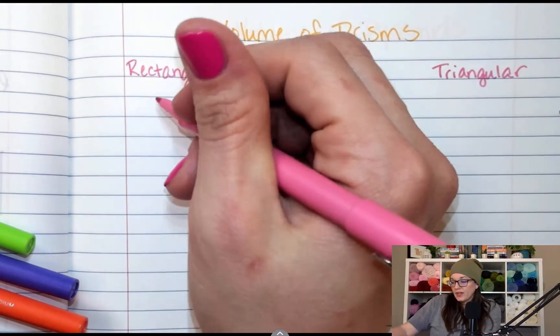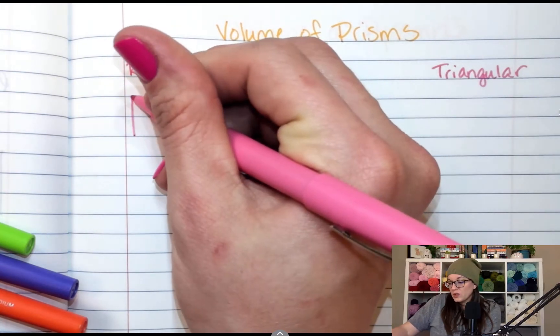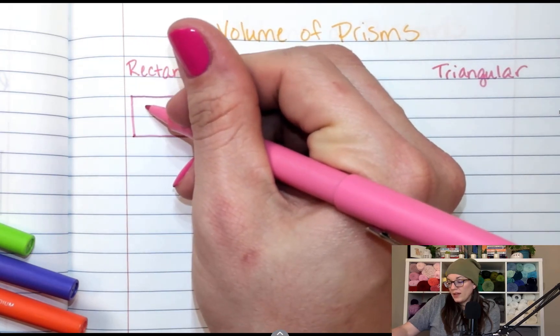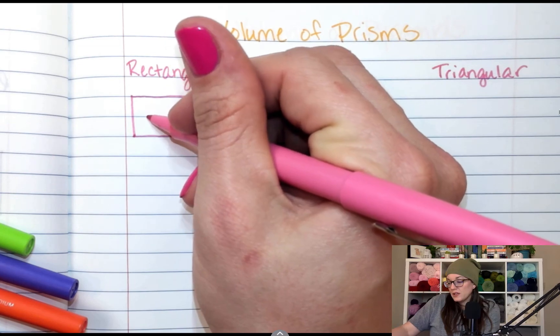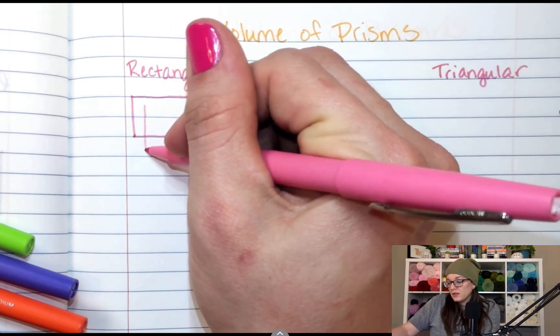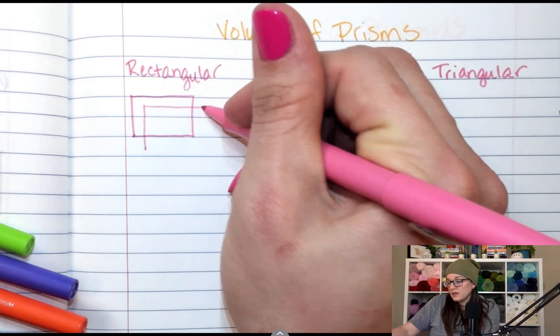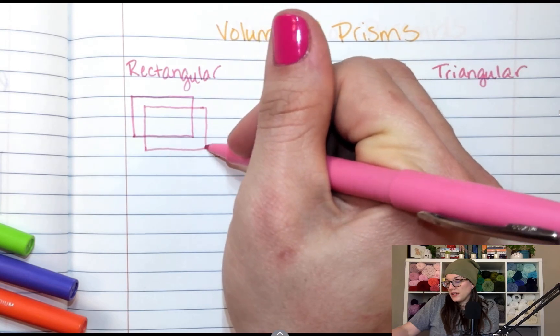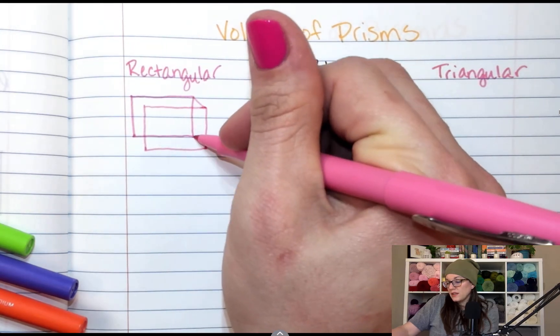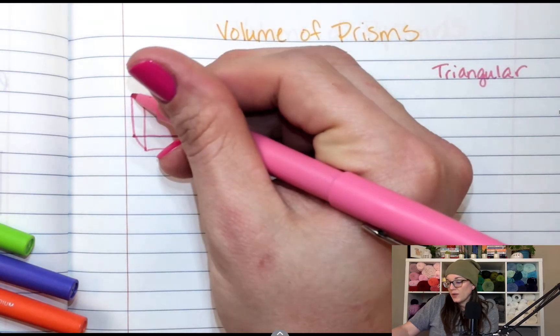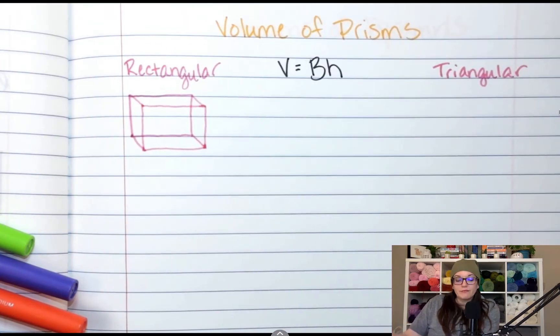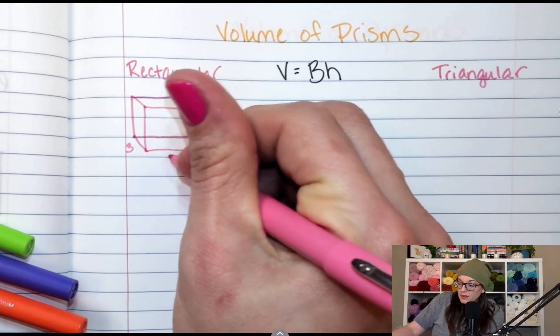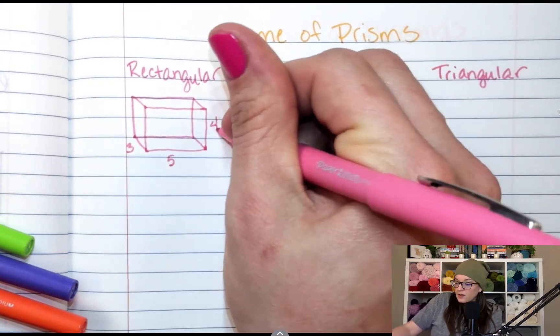So our formula, well, rectangular prisms. Draw a rectangle, and then go off and away, so I'm going to go down and to the left, and we'll go a little bit, draw another rectangle, and then connect the corners or the vertices. And now we have a rectangular prism. And my dimensions for this rectangular prism are going to be three deep, five wide, and four tall.